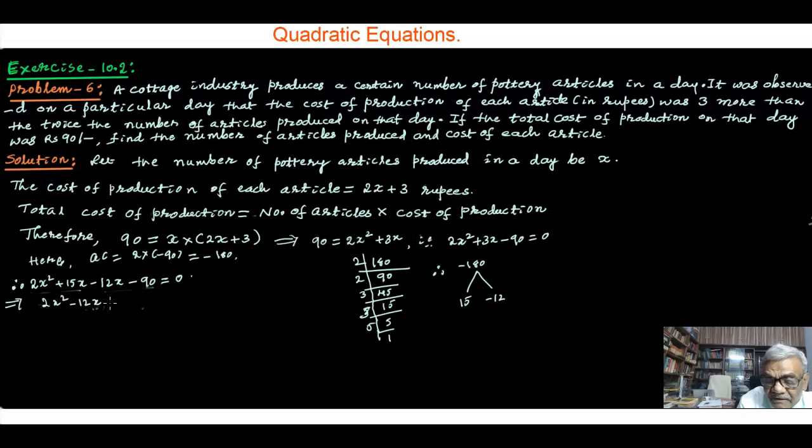This implies 2x, if you take outside, that is going to be x minus 6, plus 15, x minus 6 equal to 0. This implies 2x plus 15 into x minus 6 equal to 0.